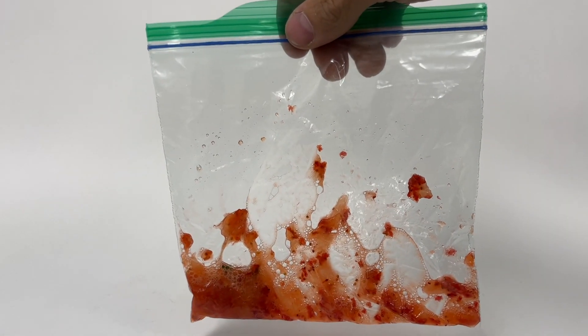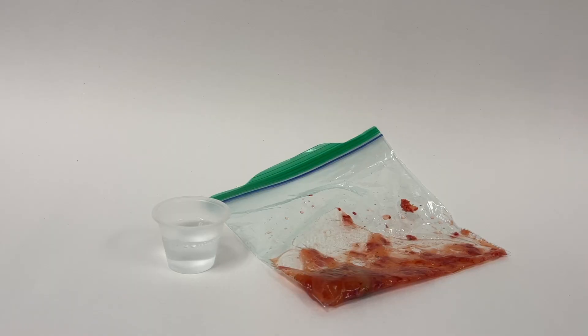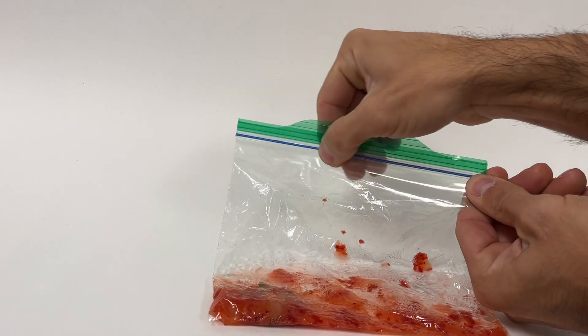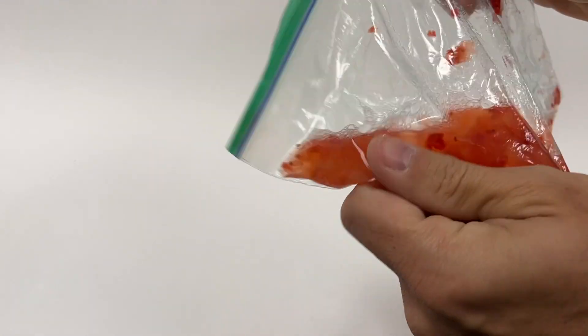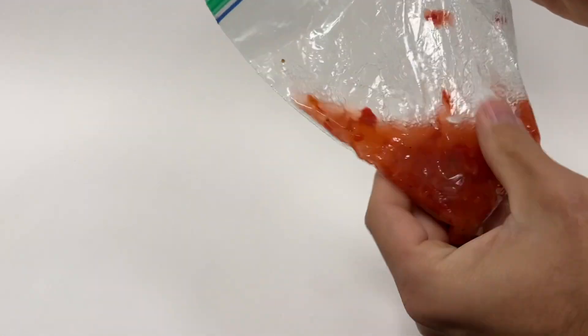Once the strawberry is thoroughly mashed, get the 20ml of soapy, salty solution and add it to the bag. Then take another 30 seconds to mix it up and mash it up a little bit more.